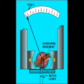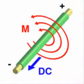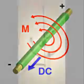Most mechanical movements are based on the principle of electromagnetism: that electric current through a conductor produces a magnetic field perpendicular to the axis of electron flow.